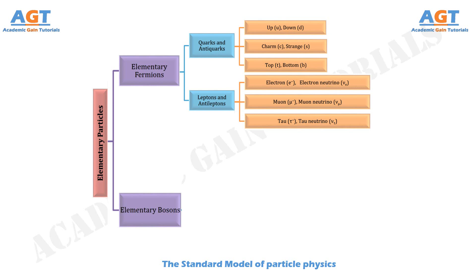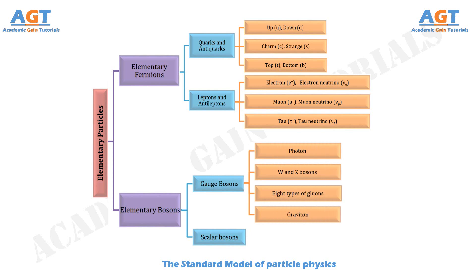Now let's have a look at the elementary bosons, which are divided into two types: the gauge bosons and the scalar bosons. The gauge bosons include the photons, W and Z bosons, along with eight types of gluons, and graviton. And the scalar bosons include the Higgs boson particles. The standard model of particle physics contains 12 types of elementary fermions, including their corresponding anti-particles, as well as the elementary bosons, which are called the force particles.